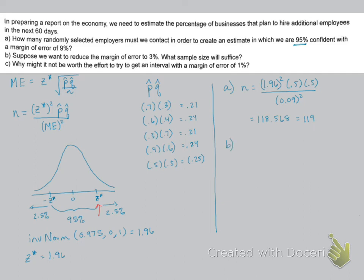For part B, they reduced the margin of error to 3%. So now we're doing 1.96 squared times 0.5 times 0.5. All that information stays the same. We're just reducing the margin of error to 3%. And when you put that in your calculator, you get 1,067.11. Again, we always want to round up to be sure that we overestimate and achieve our margin of error goal.